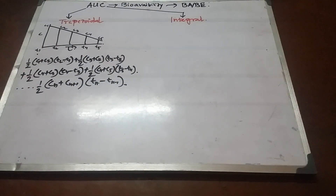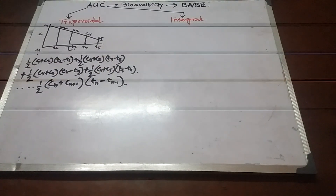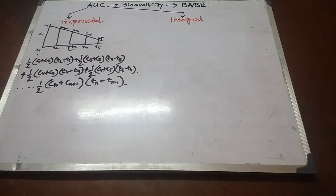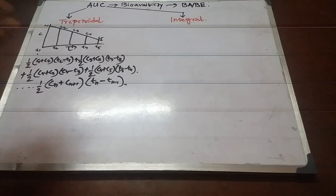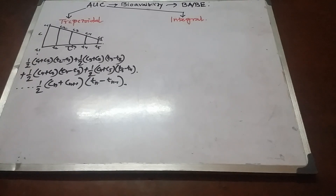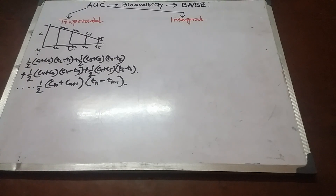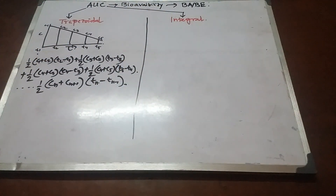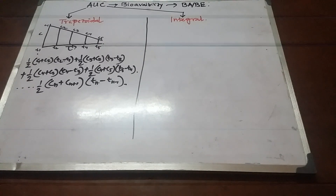To overcome this limitation, we have to use the integral method, so that we can completely determine the area under the curve from time zero to infinity. Here, infinity suggests the total washout period — that is, 7 to 8 half-lives of the drug. This is not possible graphically, but it can be achieved using the integral method, which uses integral calculus to determine the area under the curve.